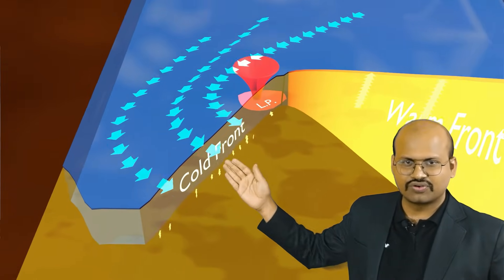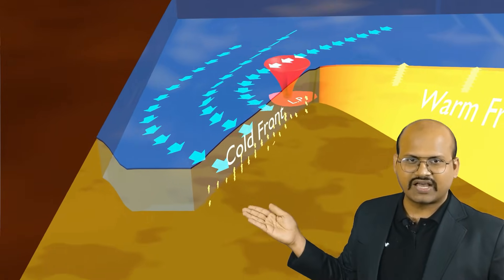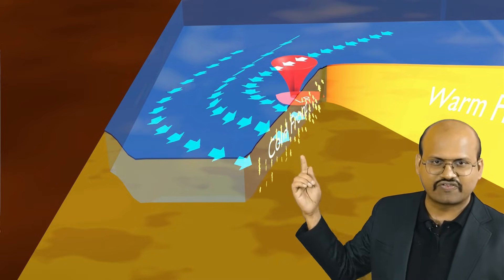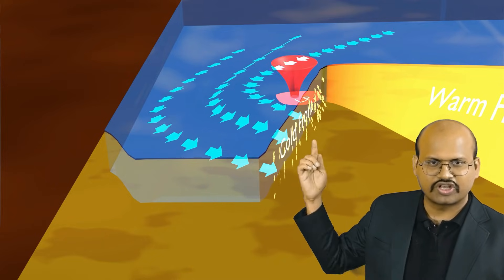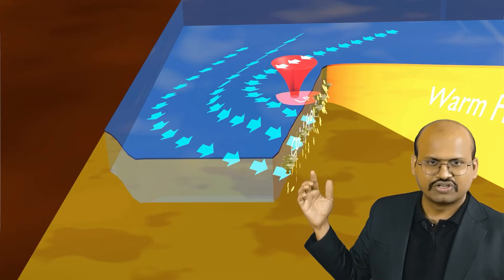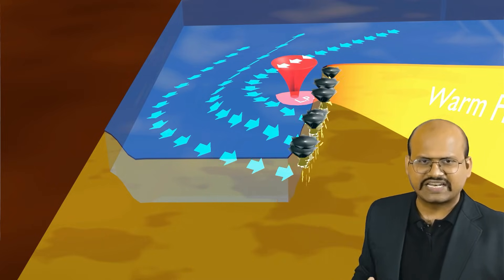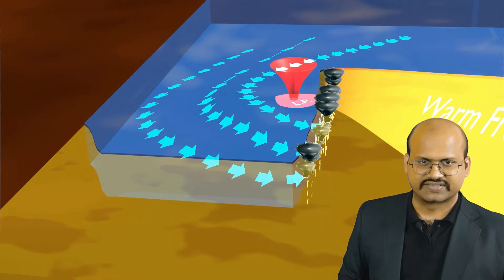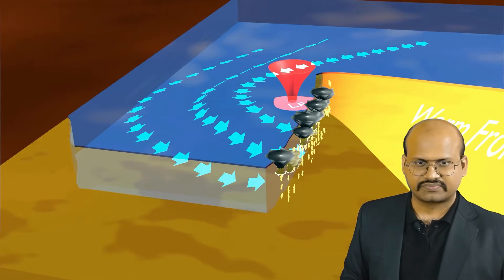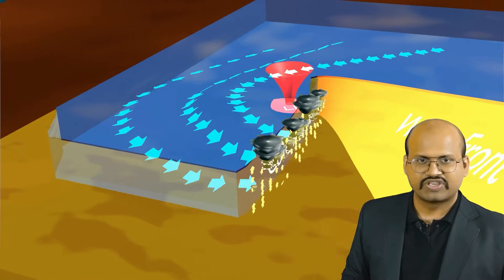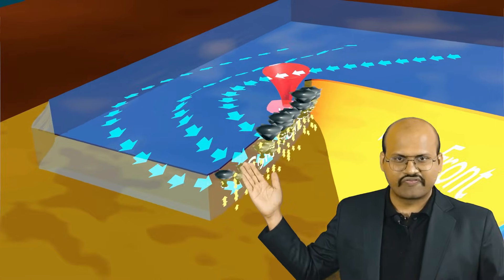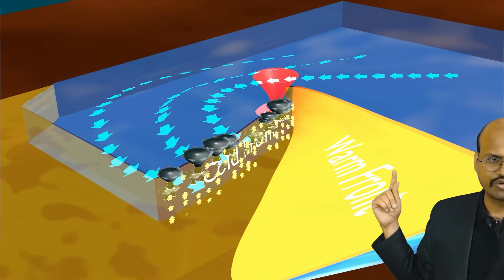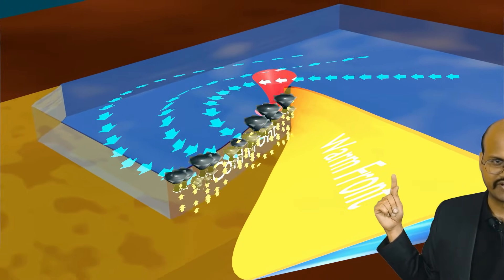Here we can see that this cold air is rapidly uplifting the warm air, and simultaneously we see formation of cumulonimbus clouds. There is a very large amount of rainfall in this region. Slowly, when this cold front moves forward, it approaches the warm front.